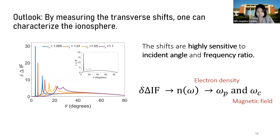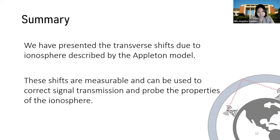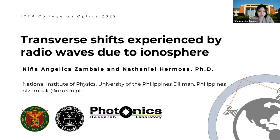Hence, by measuring the shifts, one can then characterize the ionosphere. As a summary, we have presented the transverse shifts due to the ionosphere described by the Appleton model, and we determined that these shifts are measurable and can be extended to possible outlooks, such as correcting signal transmission of radio waves, and probing the properties of the ionosphere. I thank the ICTP for this opportunity to participate in this school and share our research. Thank you so much for your attention.